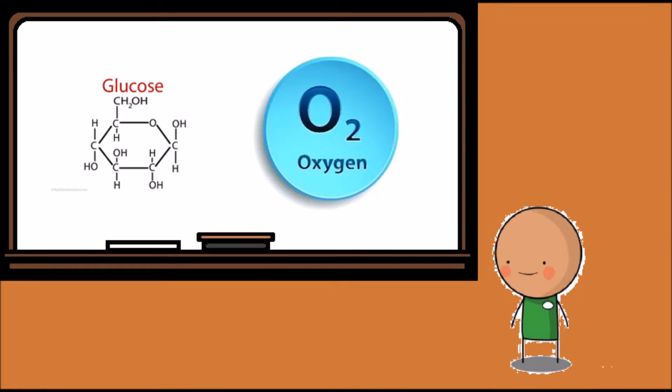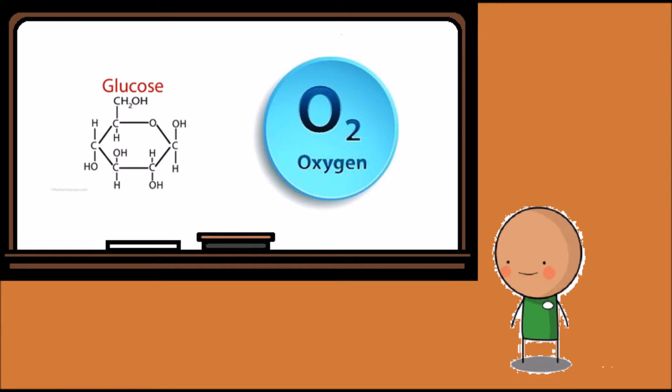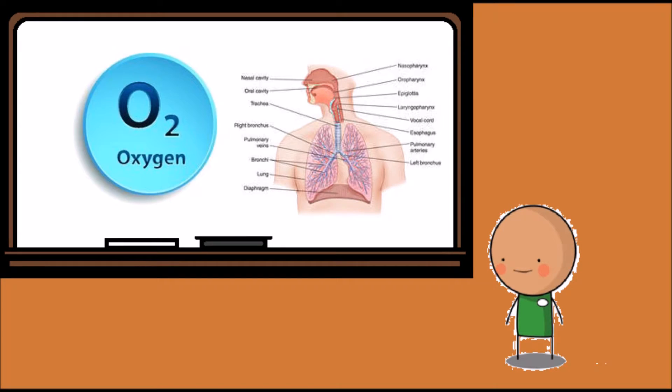You see, in order to make energy, the cells need two elements: oxygen and glucose. When we breathe, oxygen goes into our lungs. This is processed by the respiratory system.